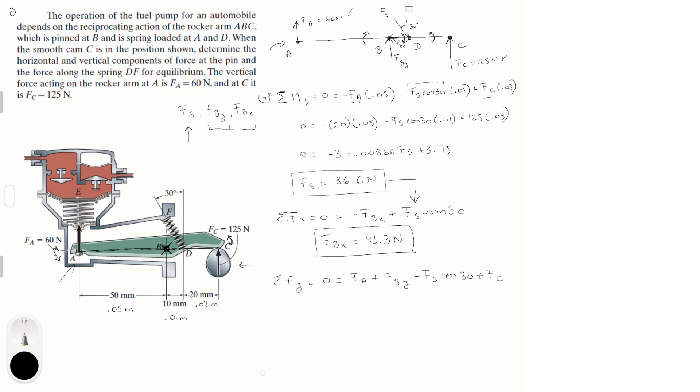We have all these values except the F_B_Y, so we could plug them in and solve. This would look something like this: 0 is equal to F_A, 60, plus F_B_Y minus 86.6 cosine of 30 plus 125.